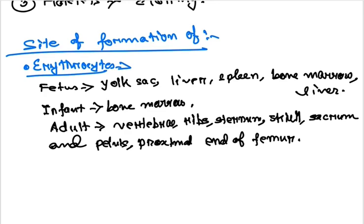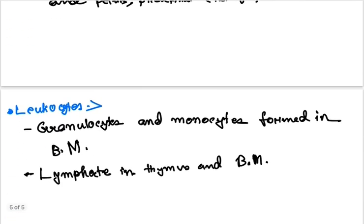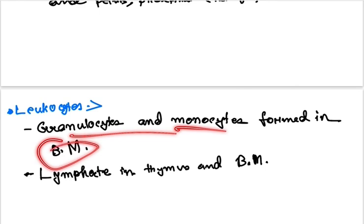For leukocytes, granulocytes and monocytes are formed in the bone marrow only, from a common precursor cell in the myeloid lineage.